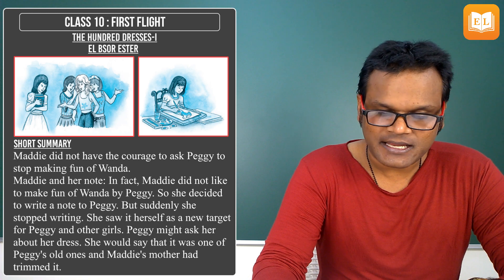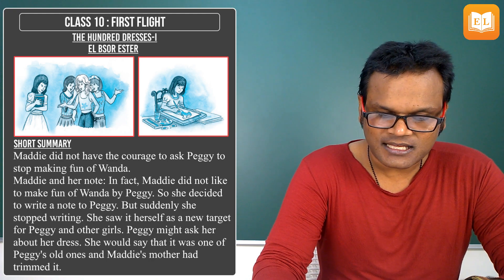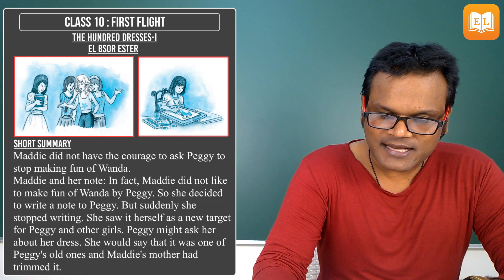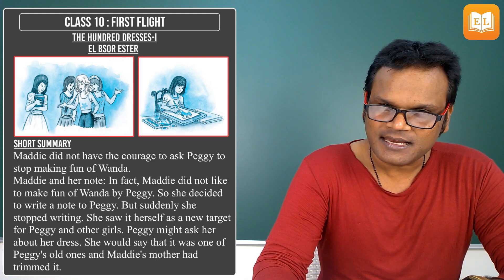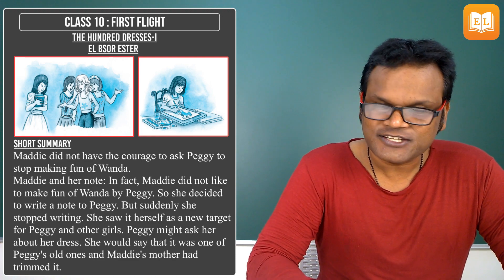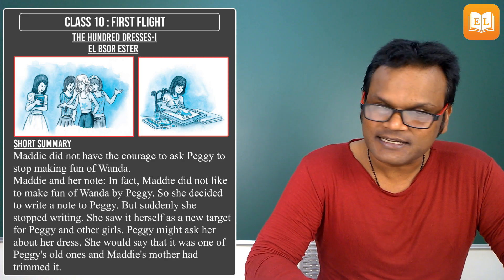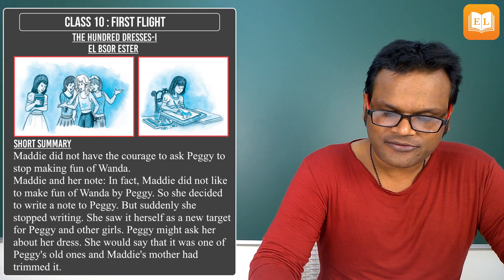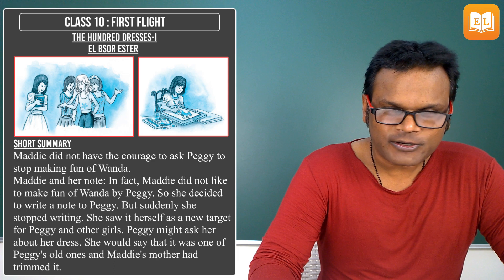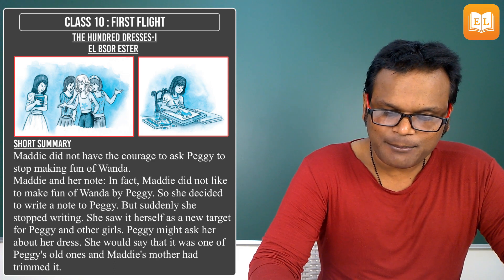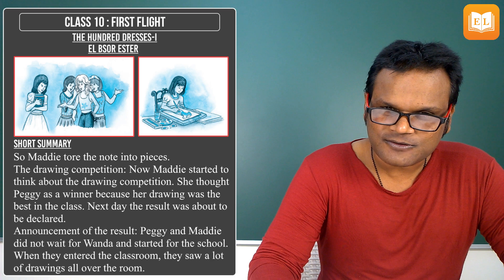Maddie decided to write a note to Peggy, but suddenly she stopped writing. She realized that by doing so she herself might become a new target for Peggy and other girls. Peggy might ask her about her dresses. She would have to say it was one of Peggy's old ones that her mother had trimmed. So Maddie tore the note into pieces.